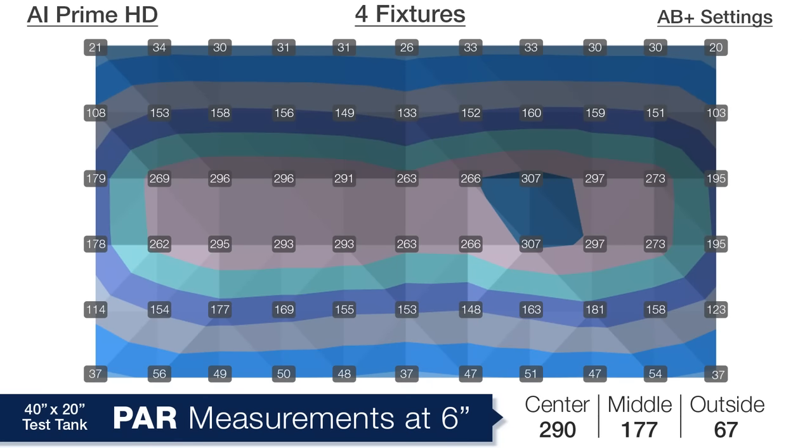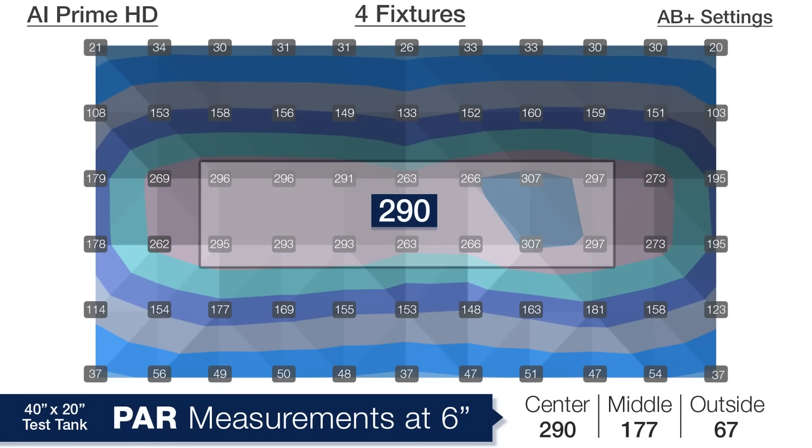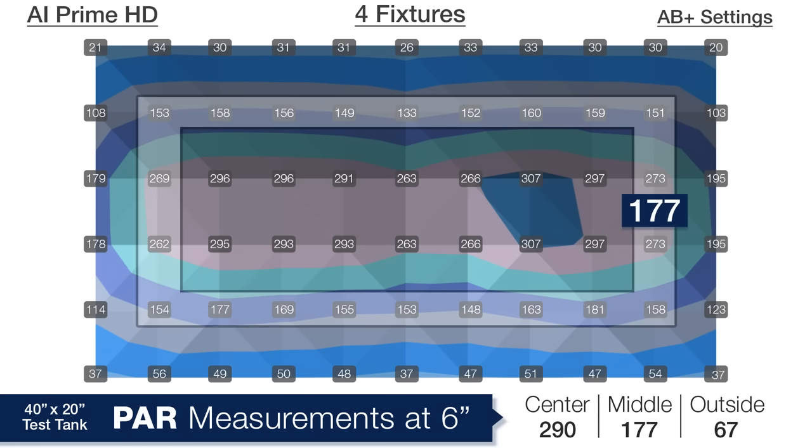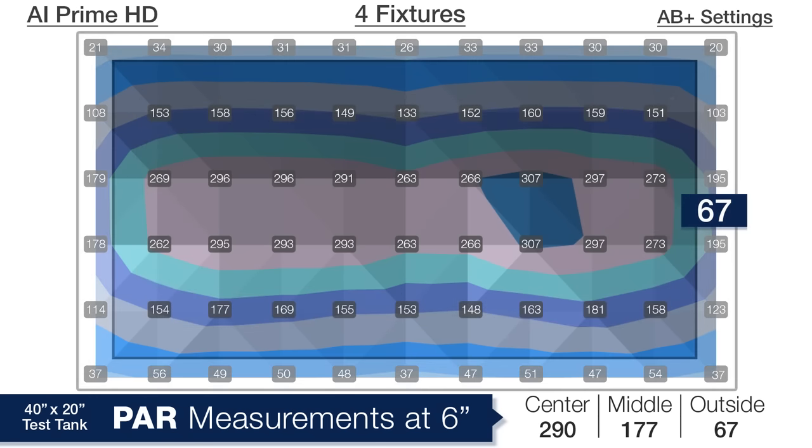So starting with 4 primes in line we are seeing a center 4 inch by 24 inch average at 290 PAR. Moving the measurements out 4 inches in all directions to that middle ring an average of 177 PAR and then 67 PAR on the outer edges at the top of the tank.